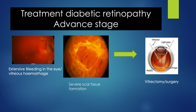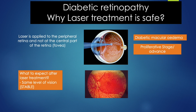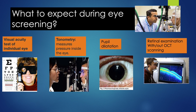Surgery is mainly to remove extensive blood, remove scar tissue, or to fix any abnormal positioning of the retina. Laser treatment is applied on the peripheral retina to reduce the oxygen demand in the eye, which will encourage the resolution of abnormal vessels. It takes a few weeks to come into effect and lasers are given in a few sessions.